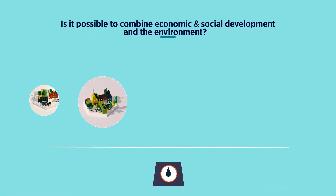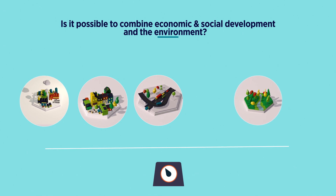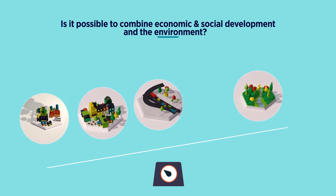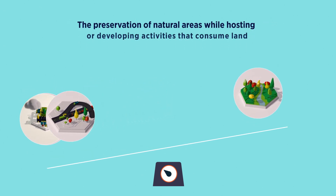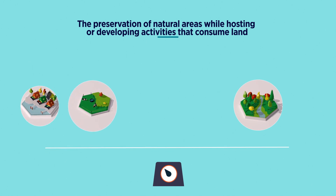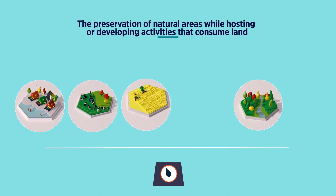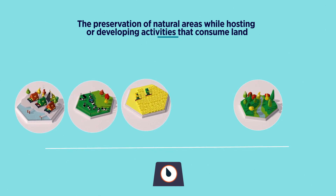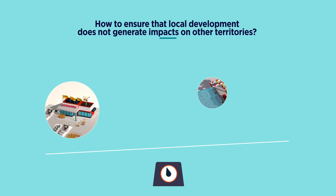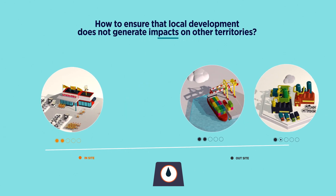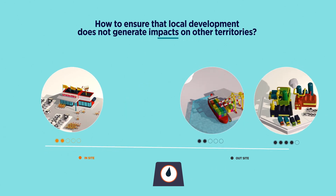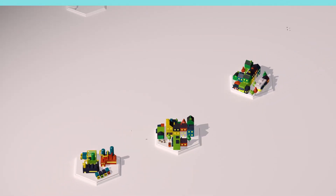Many questions arise. Is it possible to combine economic and social development and the environment? For example, the preservation of natural areas while hosting or developing activities that consume land — agriculture, tourism, etc. How to ensure that local development does not generate impacts on other territories?